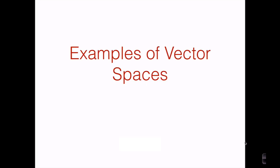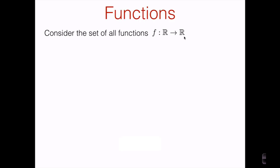In the last video we saw some examples of vector spaces, namely R^n and the set of m by n matrices. Now we're going to look at some other examples of vector spaces. These are going to be vector spaces whose elements are real-valued functions. The first vector space we're going to look at is the set of all functions taking a real number and mapping it to some other real number.